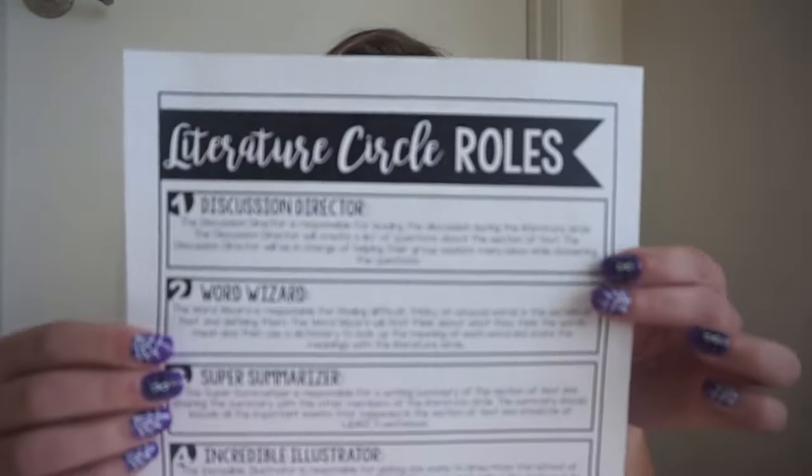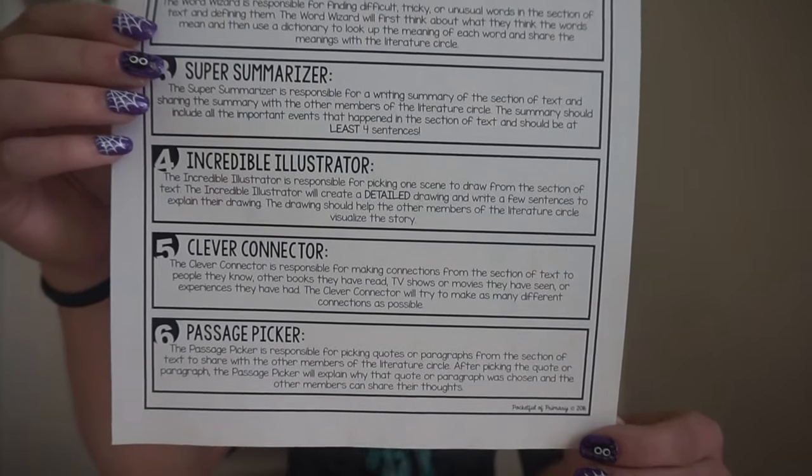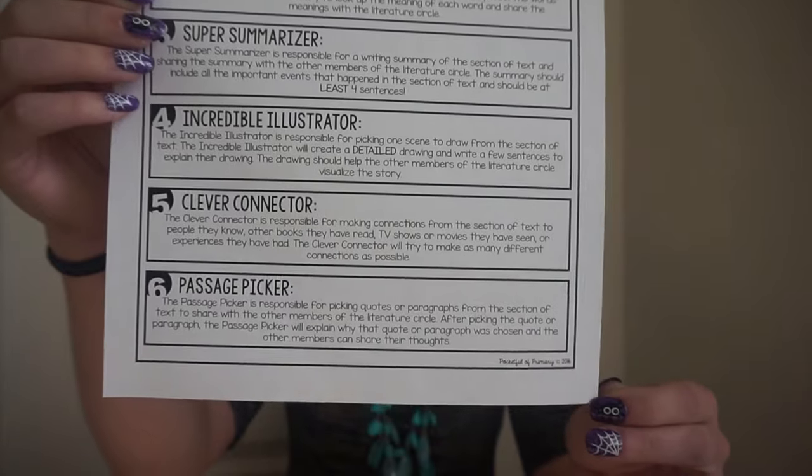If your literature circle has more than six students, I just recommend doubling up on one of the roles. My literature circle right now has seven members so each week I actually have two incredible illustrators. If you have eight students, the other one I would recommend doubling up on is the clever connector, because each student is going to come with different background knowledge and be able to make different connections to the text. Here's what that overview page looks like — a short description for each role, all on one page.